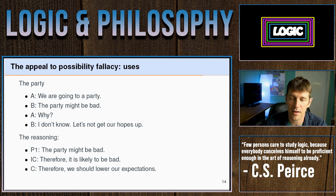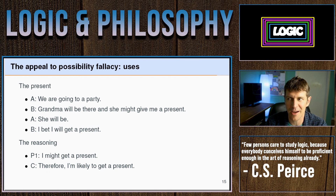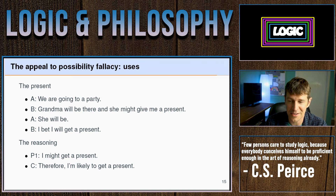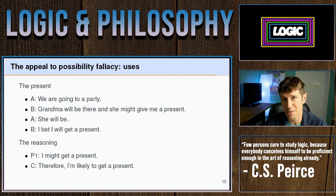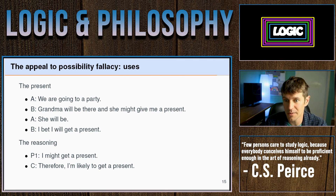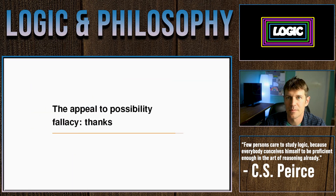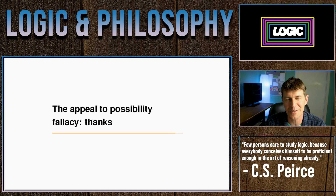Children in my experience have used the fallacy in a more optimistic way. For example, you're going to a party and grandma will be there, and the child says, 'She might give me a present.' This is a logical possibility. Then when I tell my daughter grandma will be at the party, she begins to daydream that she'll get a present and bets me she will. The reasoning: I might get a present, therefore I will get a present — and that commits the fallacy. So that's the appeal to possibility fallacy. If you have examples you'd like to share, leave them in the comments below.